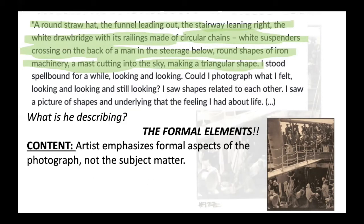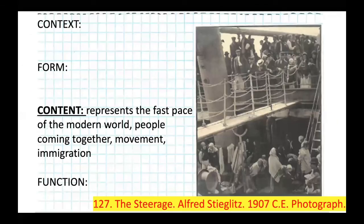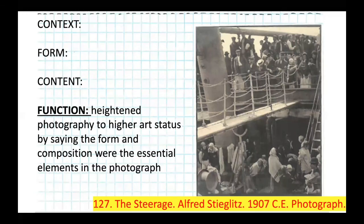The artist emphasizes formal aspects of the photograph, not just the subject matter. He's embracing the beauty of a photograph. He believed the camera was to be used to document the modern world — similar to the painting movement Realism. The content also represents the fast pace of the modern world: people coming together, different classes, movement, immigration. The function of this as an art piece is heightening photography to a higher art status by saying form and composition were essential elements in the photograph.